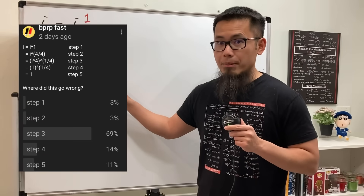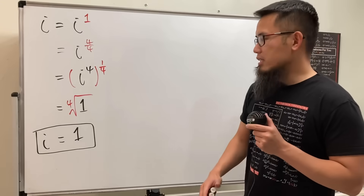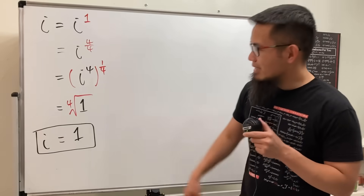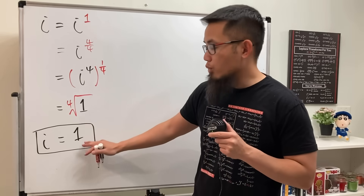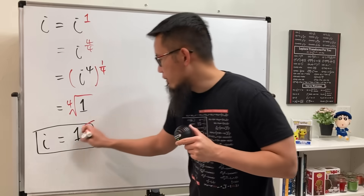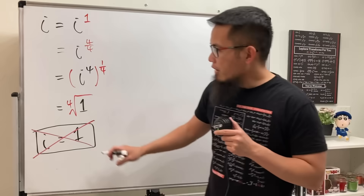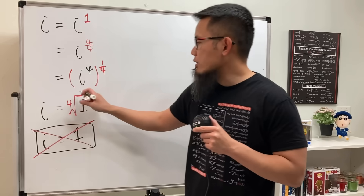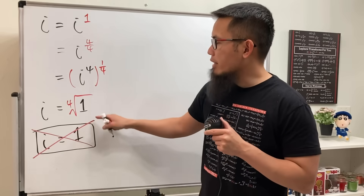The mistake is at step number 3 right here. In this video, let me explain all the things I think you should know. From here to here, we have no problem with the 4th root of 1 is equal to 1, but we just cannot say 1 is equal to I. So let me cross this out first.